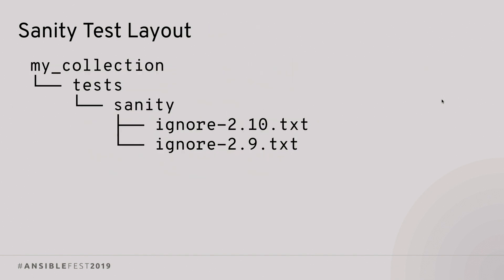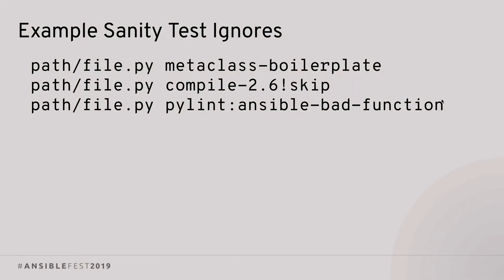A quick layout: under your collection directory, you have tests/sanity/ with one or more ignore files. As you test with more Ansible versions, you'll end up with more ignore files there. What do those ignore entries look like? They're pretty straightforward — you have the path to the file being tested, a space, and the name of the test to ignore. If a test has a problem where you can't even run it at all, you can skip it entirely by appending !skip to the test name. And for tests like pylint that have multiple error codes, you can specify a colon followed by the specific error code you need to ignore.